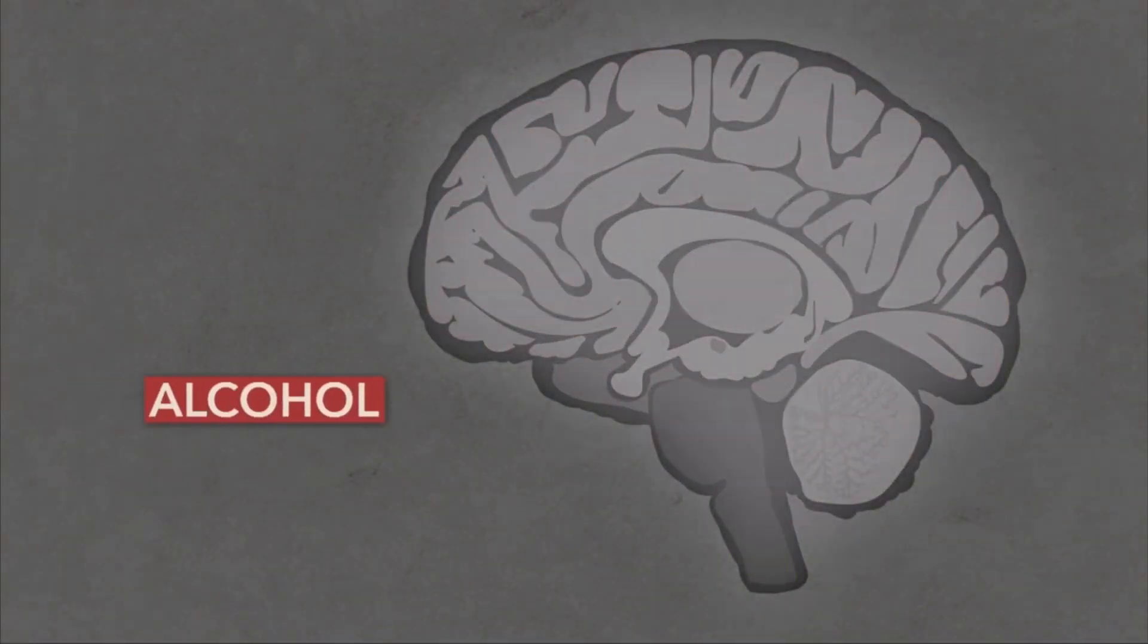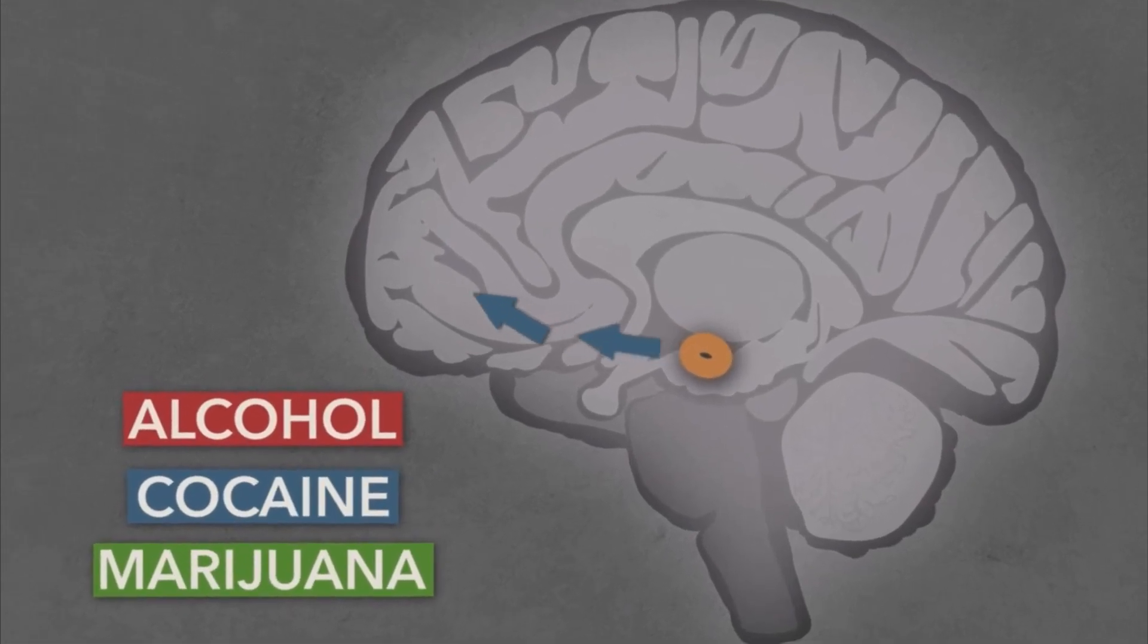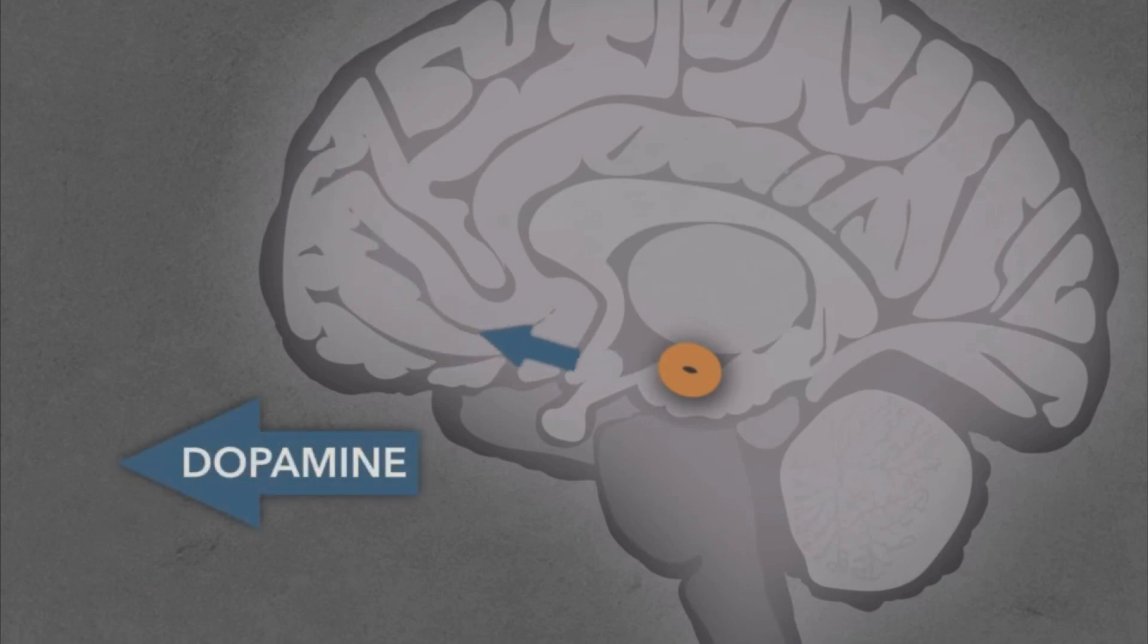Drugs of abuse, like alcohol, cocaine or marijuana, work by exploiting this same pathway that has helped humans to learn and survive for generations. All addictive drugs, either directly or indirectly, modulate dopamine signaling in this pathway.